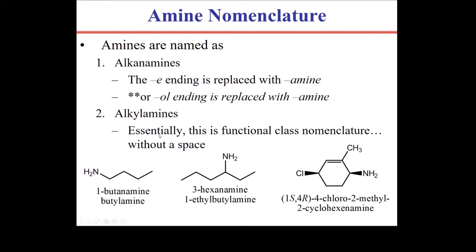The alkylamine nomenclature is similar to functional class nomenclature — you simply state that it's an amine, then state what carbons are coming off of it. Looking at the longest continuous chain extending directly from the nitrogen — one, two, three, four — that gives butylamine, with an ethyl group coming off the one position. Functional class nomenclature works for simple compounds, but the alkanamine system gives more flexibility.